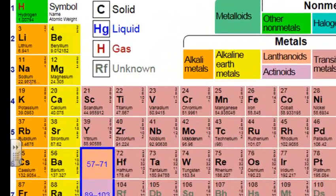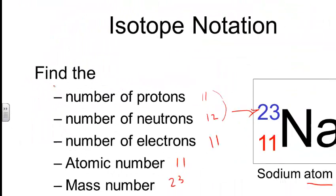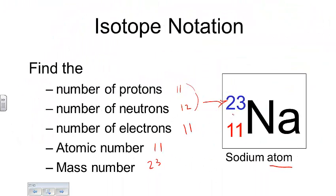When we look at sodium on the periodic table, the average atomic mass is 22.98976. In isotope notation, we're talking about a particular form — not the average mass, but the mass of this particular form. The mass of this particular form of sodium is 23 because we have 11 protons and 12 neutrons, and the mass is an accumulation of the number of protons and neutrons.